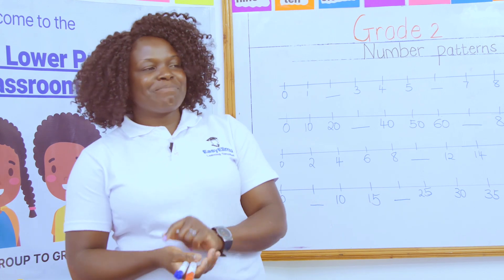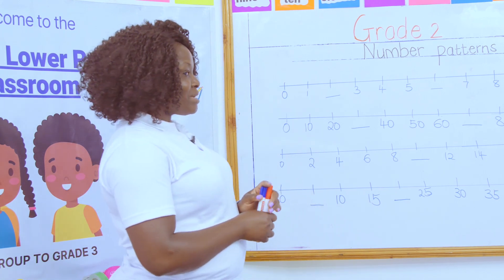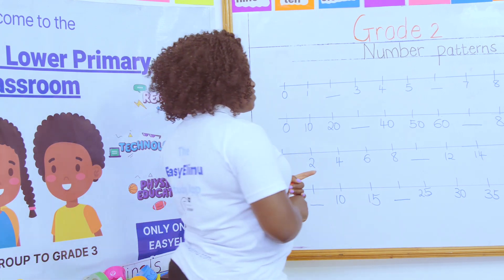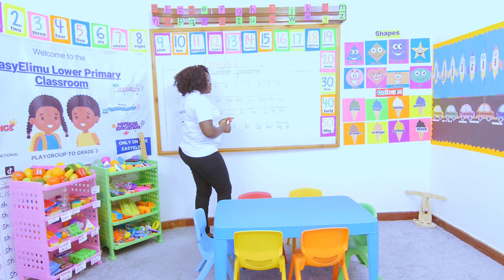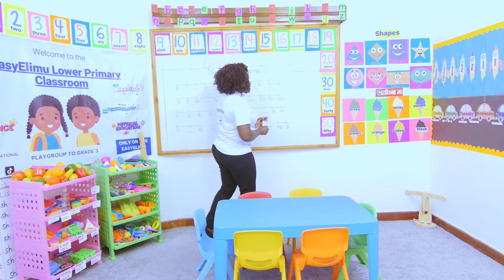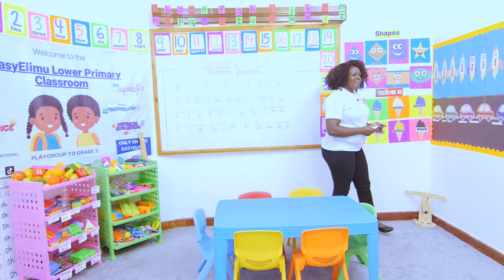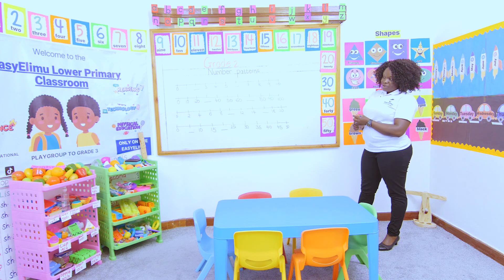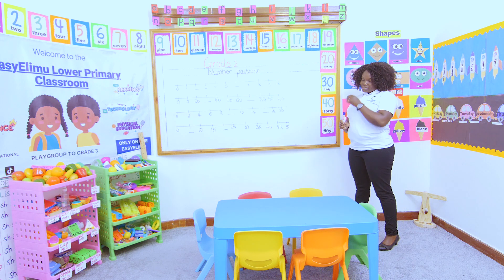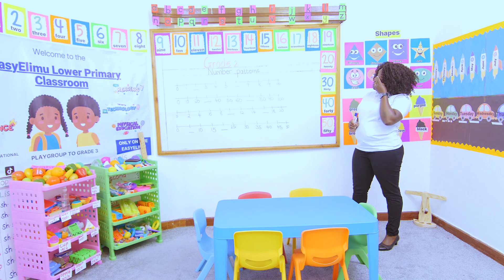Learning Simplified. You remember the patterns we said — patterns can be formed using shapes, using numbers, using lines, using letters. So many things can form patterns. Do you know that we can form patterns using colors and also patterns using shapes?